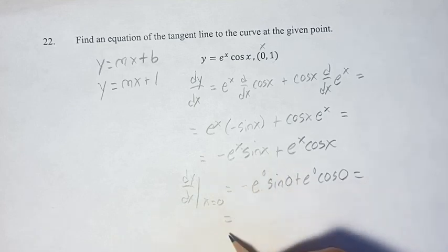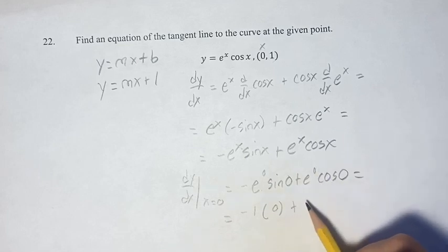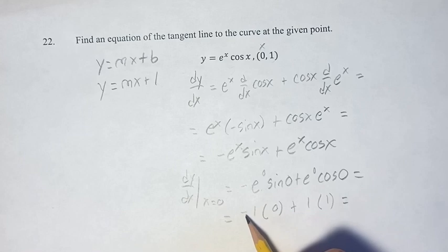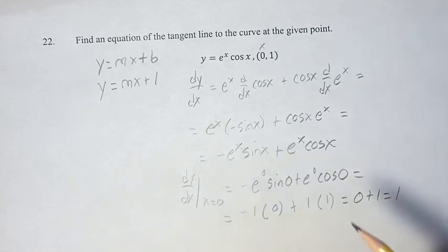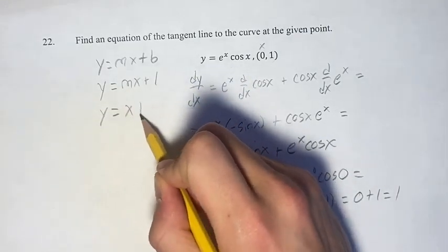We have negative e to the 0 is 1, so negative 1 times sine 0 is 0, plus e to the 0 is 1 times cosine 0 is 1. So this is negative 1 times 0 is 0, plus 1 times 1 is 1, 0 plus 1 is 1. So the value of the derivative and therefore the slope of the tangent line is 1. So it's y equals 1x or just x plus 1.